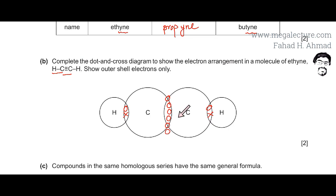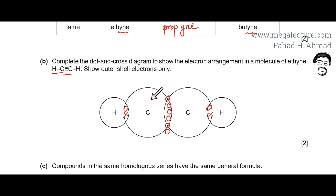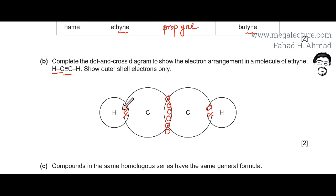This is the dot and cross diagram. Carbon is in group four and shares four electrons — one with hydrogen and three with the other carbon atom via the triple bond. This carbon also shares three with the adjacent carbon atom and one with its hydrogen atom. Hydrogen only has one electron so it shares only one electron.